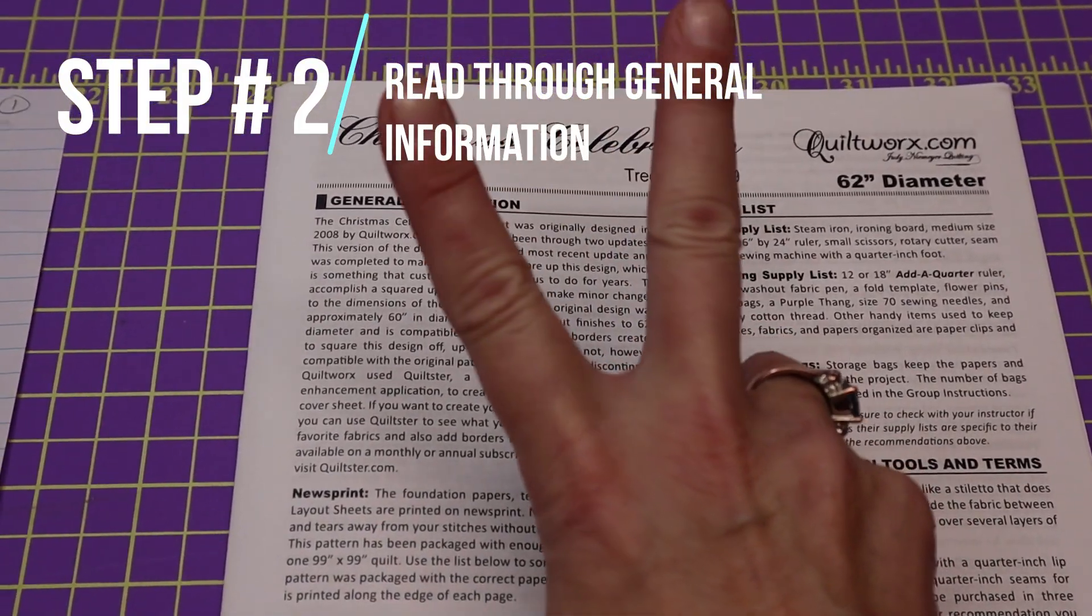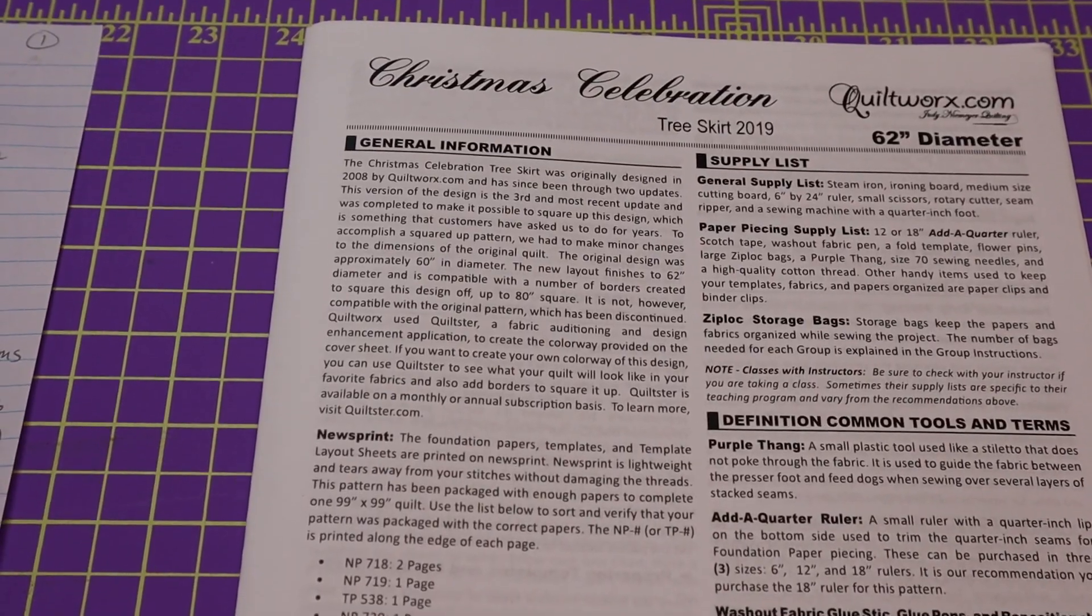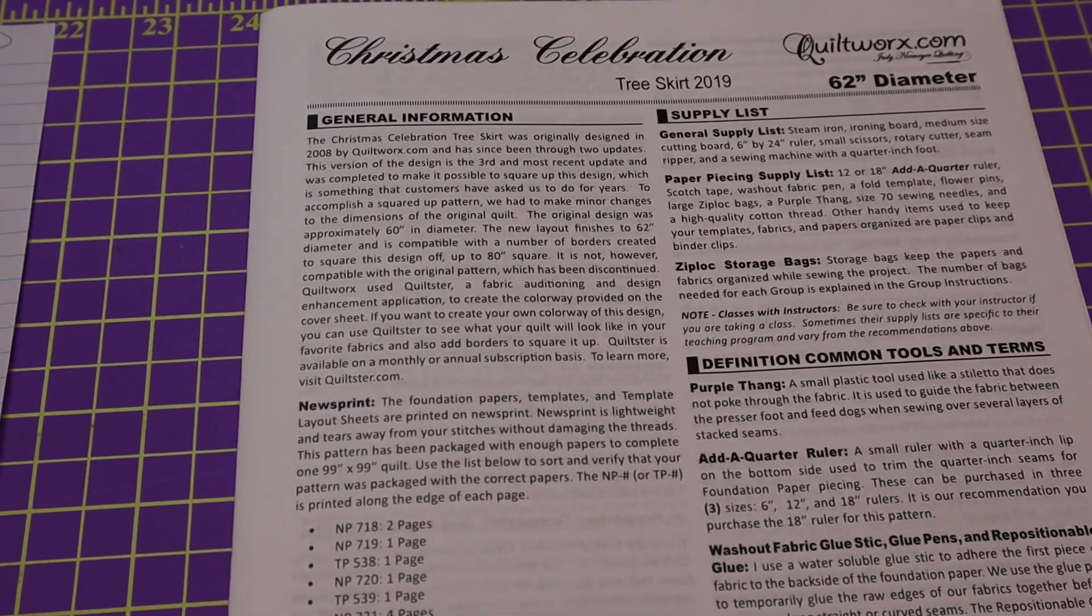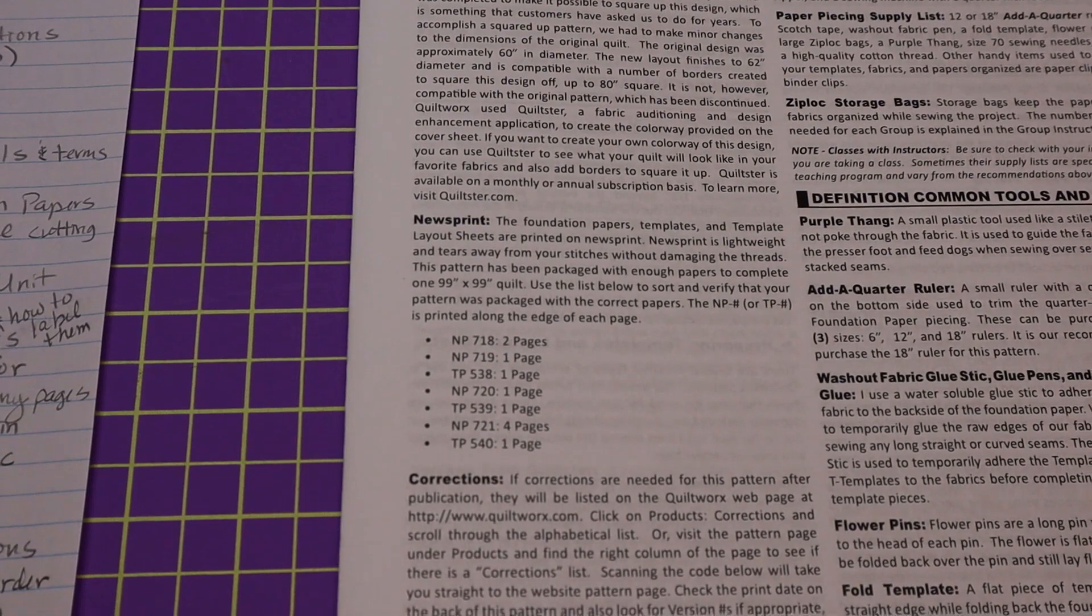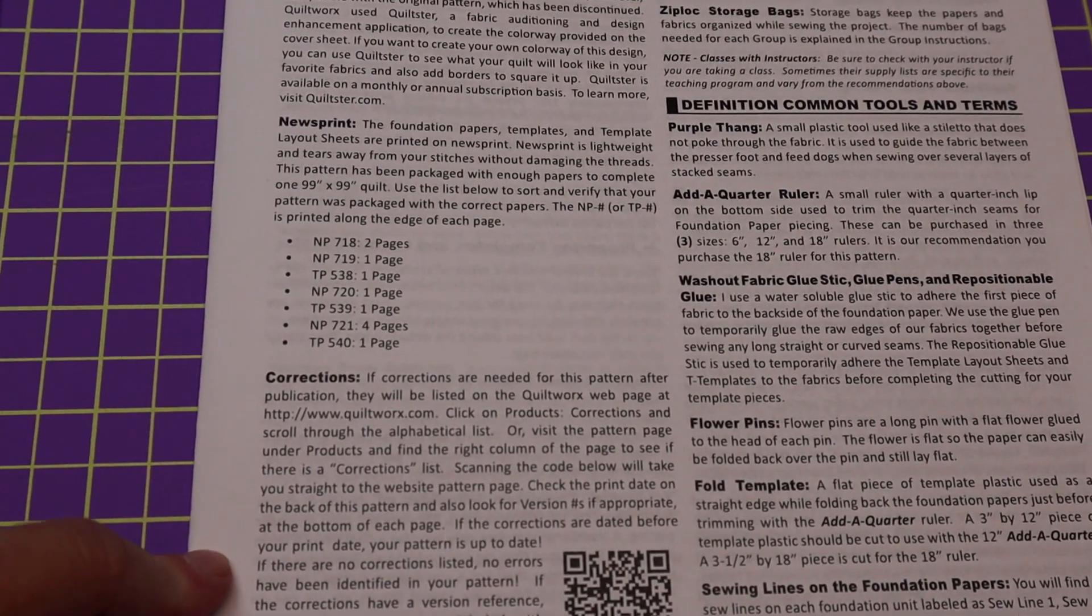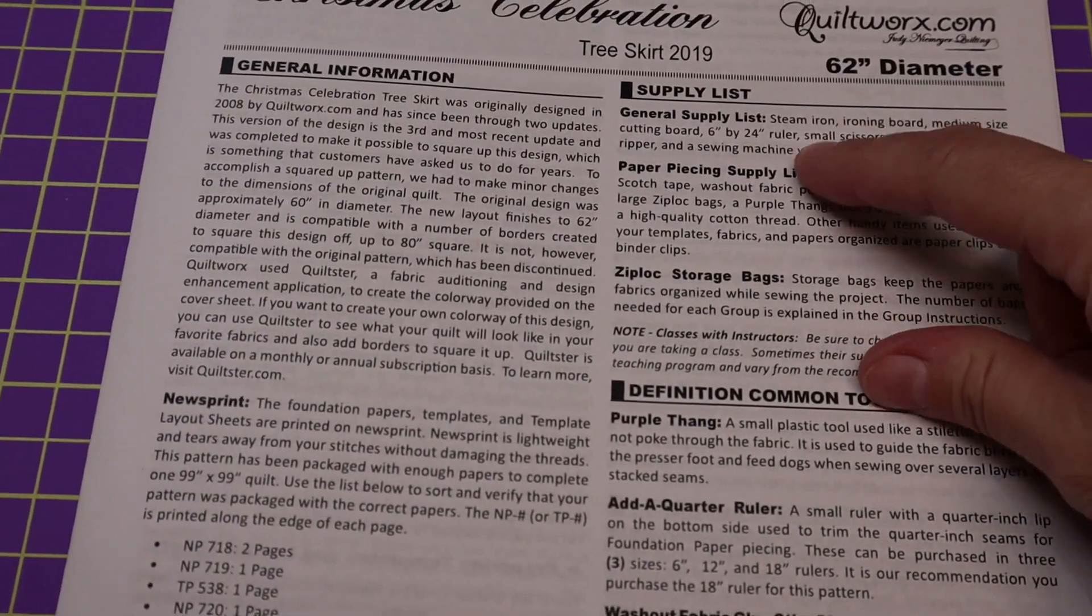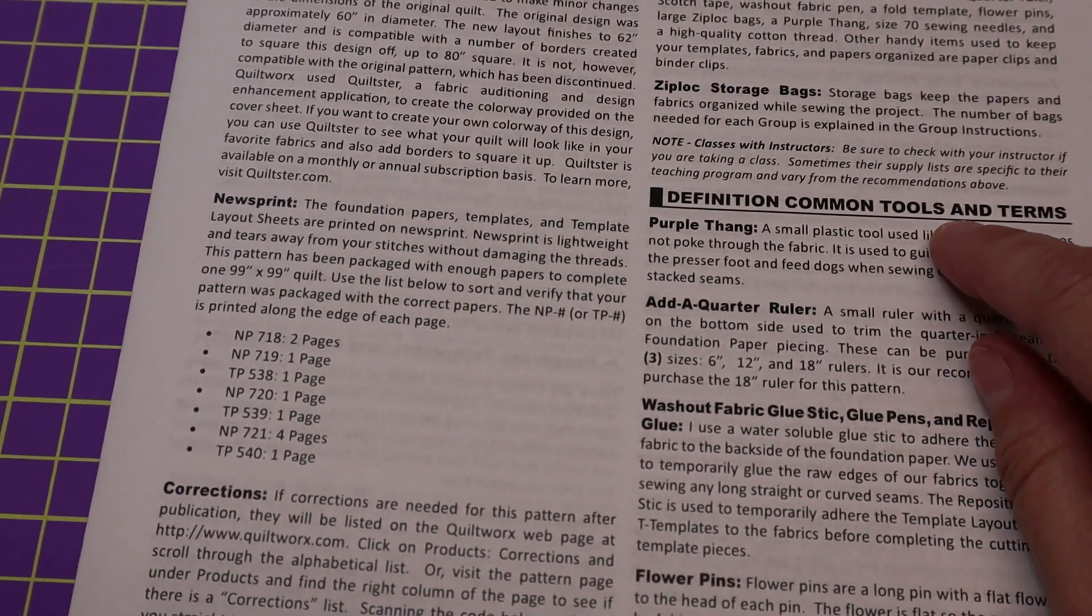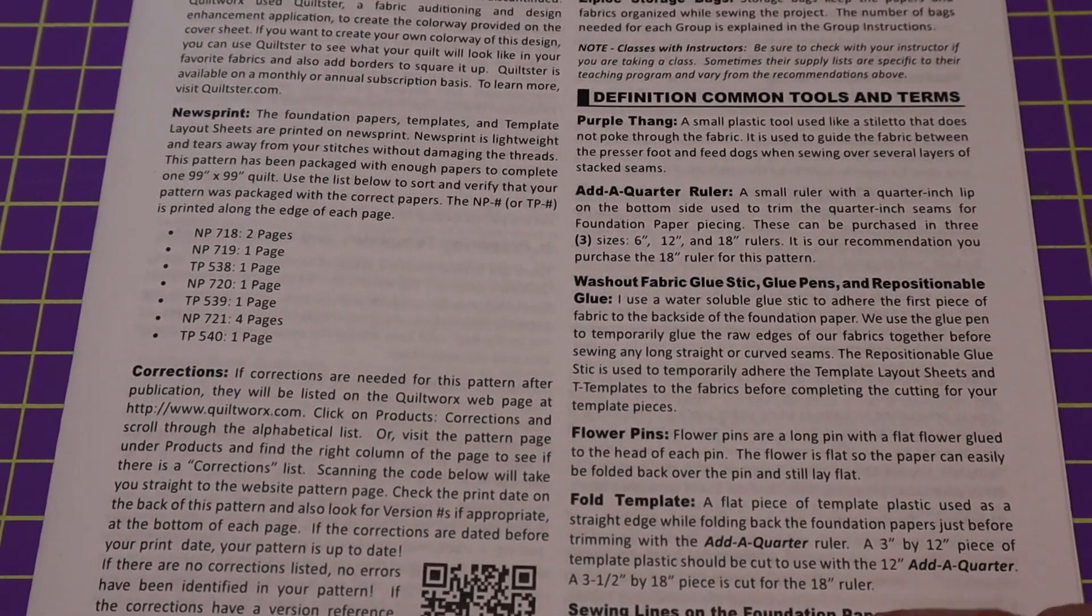Okay, step two. The next step is to turn your pattern over and go to page one. This will just basically start and go through general information and what the pattern is. It gives you another reference here of your newsprint pages. It will tell you again about corrections. Then you're going to see basically just a general supply list, definition of common terms and tools that you'll be using. It's just nice to, if you've never done a Quiltworks pattern, to read through those.